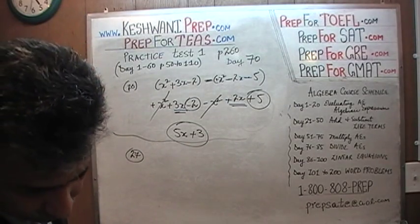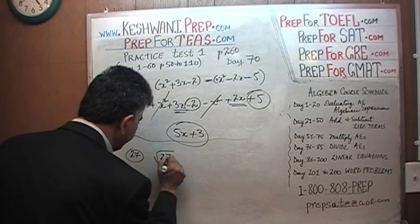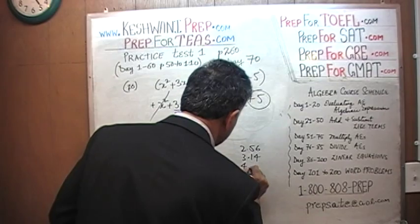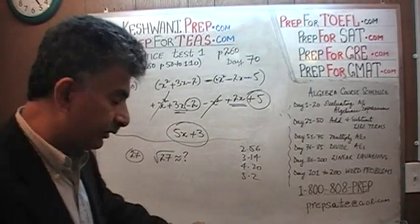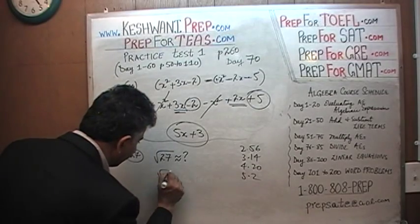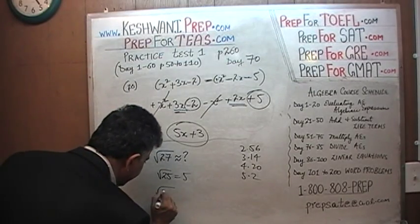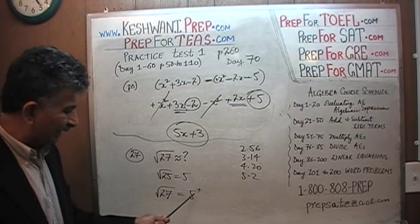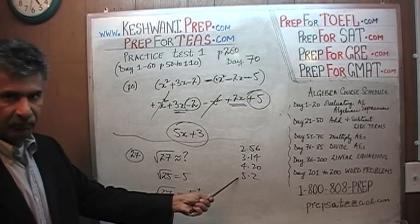Number 27: Which of the following decimals is the approximate value of the square root of 27? The answer choices are 3.14, 4.2, and 5.2. It's very important how the answer choices are laid out because that determines how much work we put in. We know the square root of 25 is exactly 5. Therefore, the square root of 27 is going to be something a little bit more than 5. There's only one answer choice more than 5.